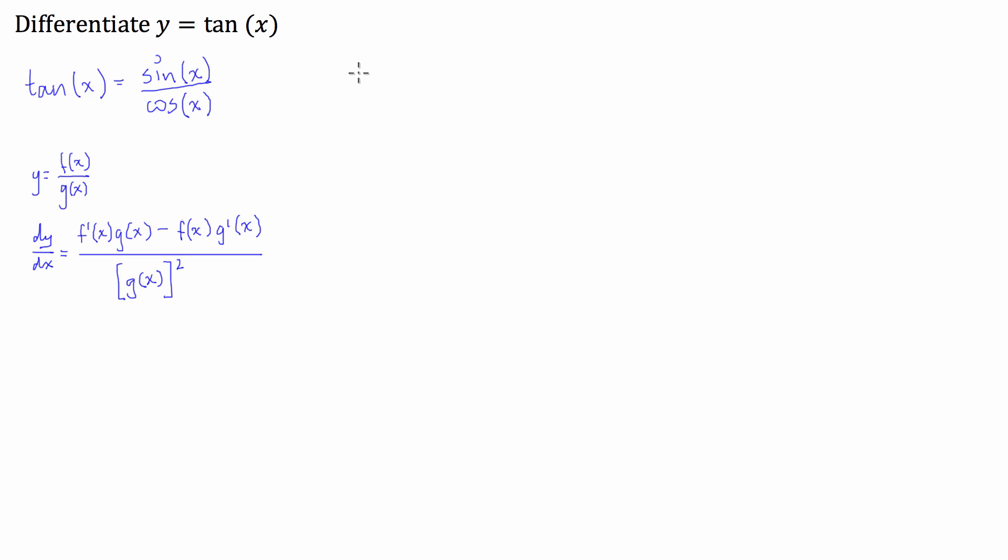So, if we want to work out what the derivative of tan of x with respect to x is, what we're going to do is we're going to have to differentiate this fraction here, sine over cos. So, using the quotient rule, what we can do is we can go, okay, this is going to be equal to